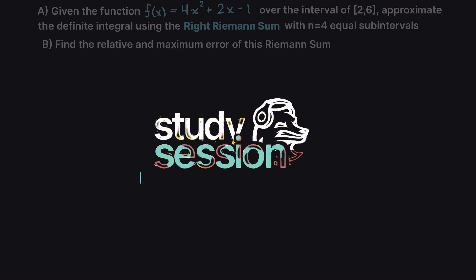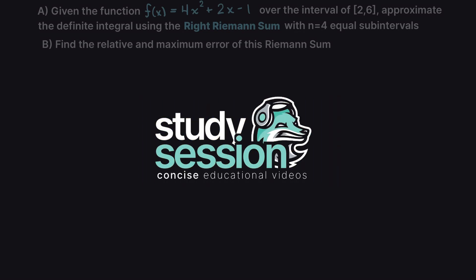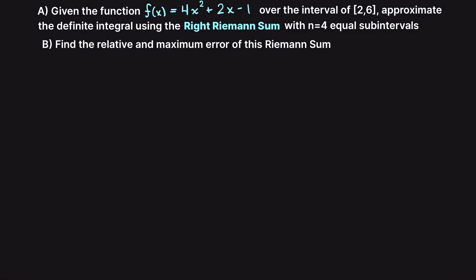Hey everyone, in this example video we are asked to approximate the definite integral of the function 4x squared plus 2x minus 1 over the interval of 2 to 6 using the right Riemann sum with 4 equal subintervals. Additionally, we are asked to find the relative and maximum error.